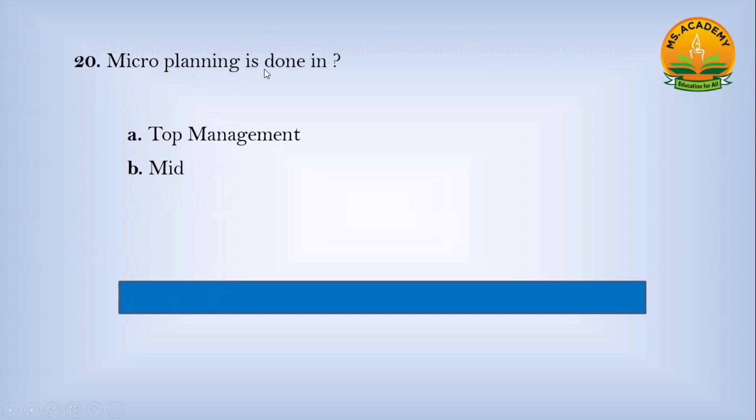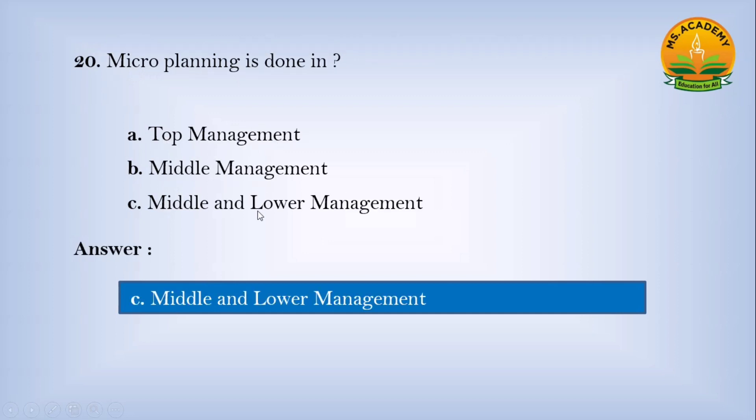Micro planning is done in: Option a) Top Management, Option b) Middle Management, Option c) Middle and Lower Management. Answer: c - Middle and Lower Management.